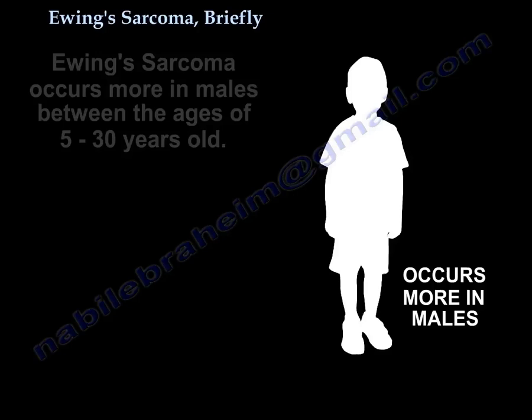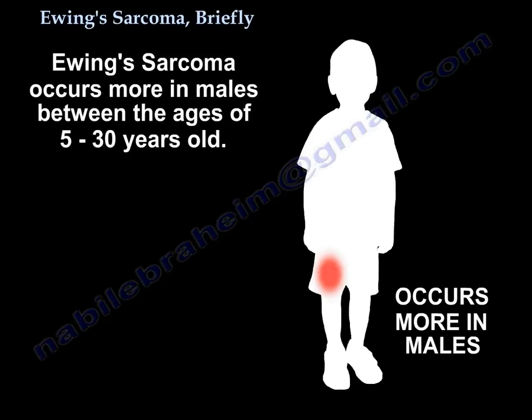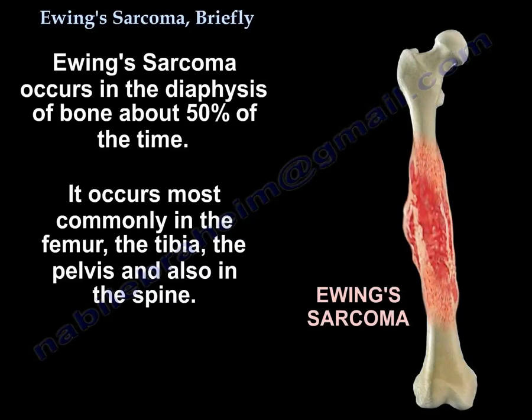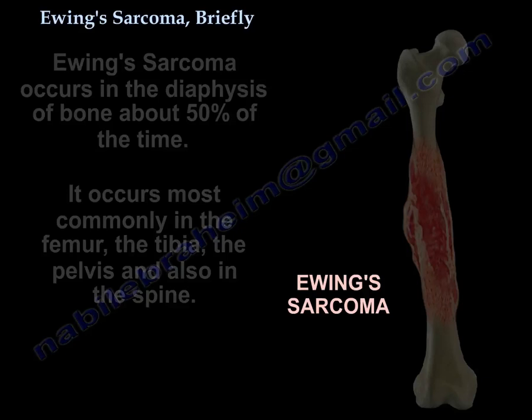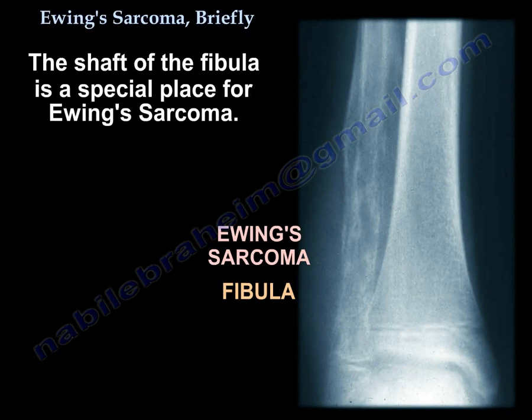Ewing sarcoma occurs more in males between the ages of 5 to 30 years old. It occurs in the diaphysis of bone about 50% of the time. It occurs in the femur, the tibia, the pelvis, and the spine. The shaft of the fibula is a special place for it.